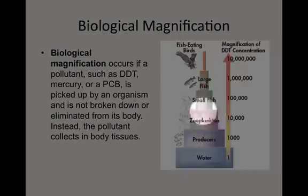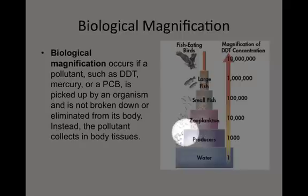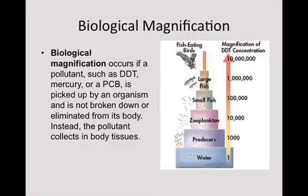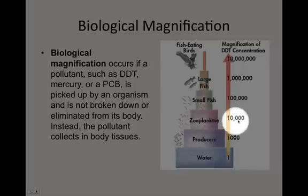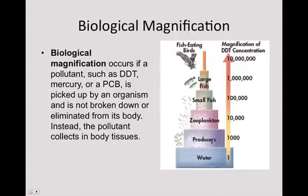Moving up to the next layer, zooplankton eat the phytoplankton. Every phytoplankton a zooplankton eats, it builds up all of that pollutant — because the pollutant subject to biological magnification does not get processed out. If a zooplankton eats 10 phytoplankton, it gets all the pollutants from those phytoplankton. The amount increases from about 1,000 to 10,000 parts per million.